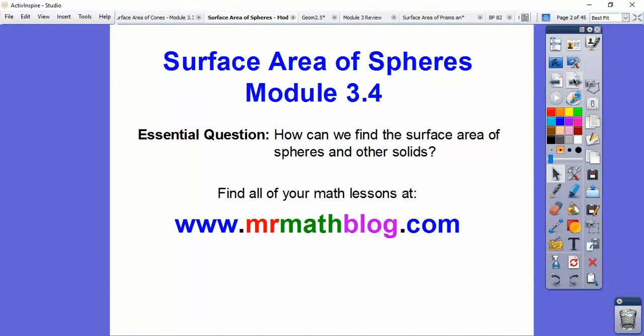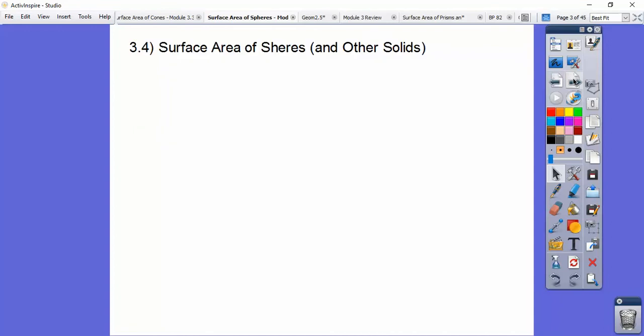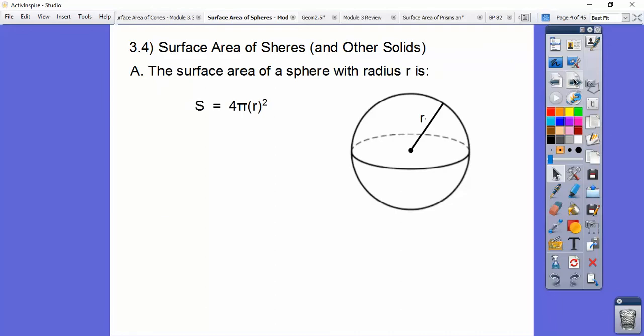There's our question. So how can we find the surface area of spheres and other solids? So surface area of spheres. There's our formula, 4πr².